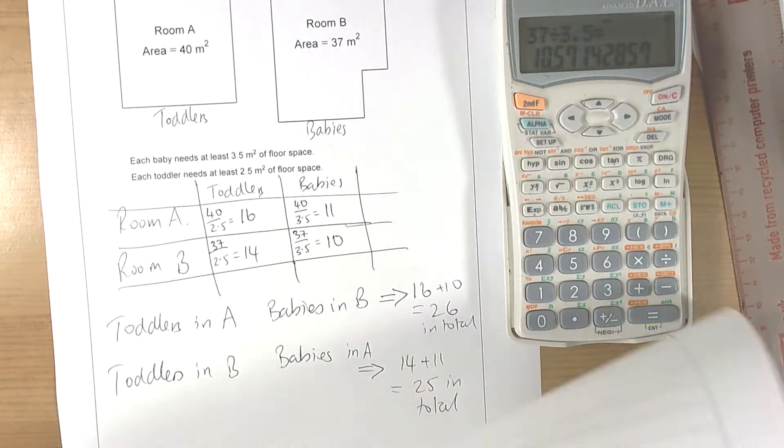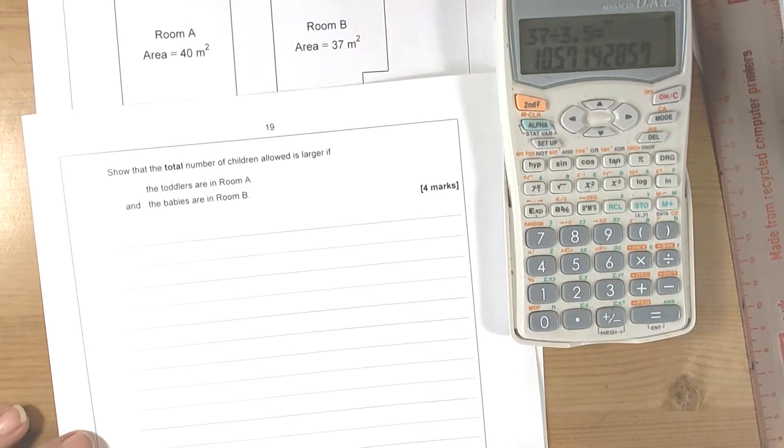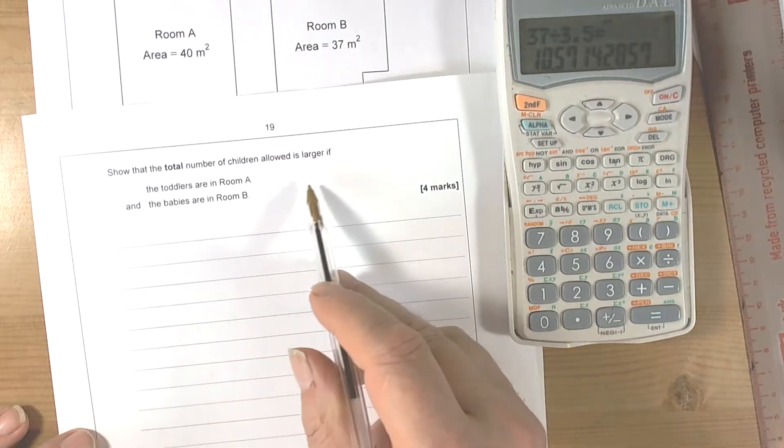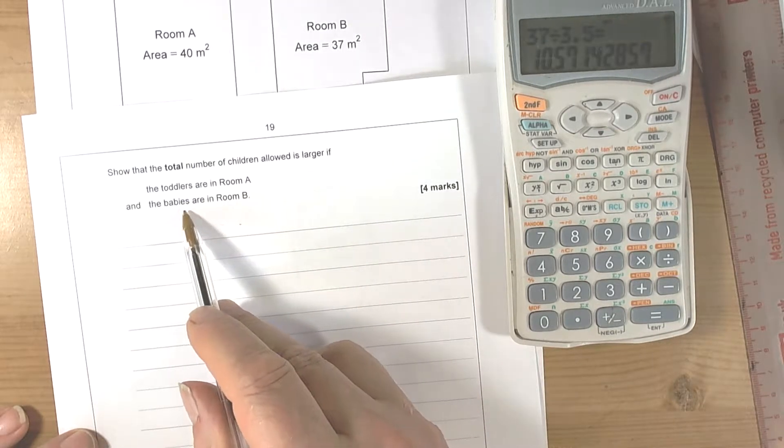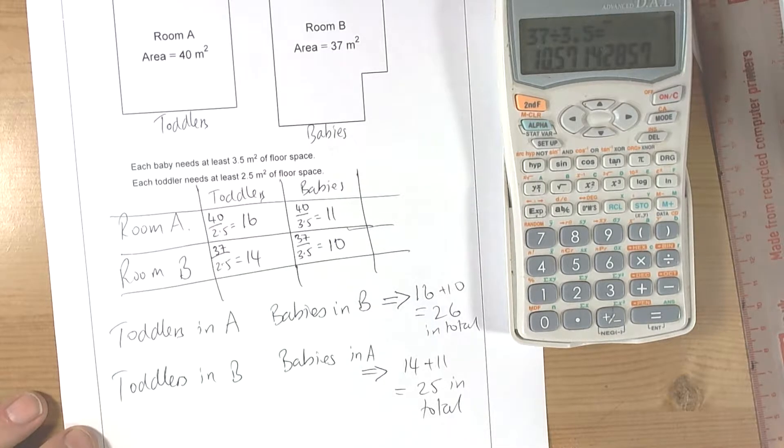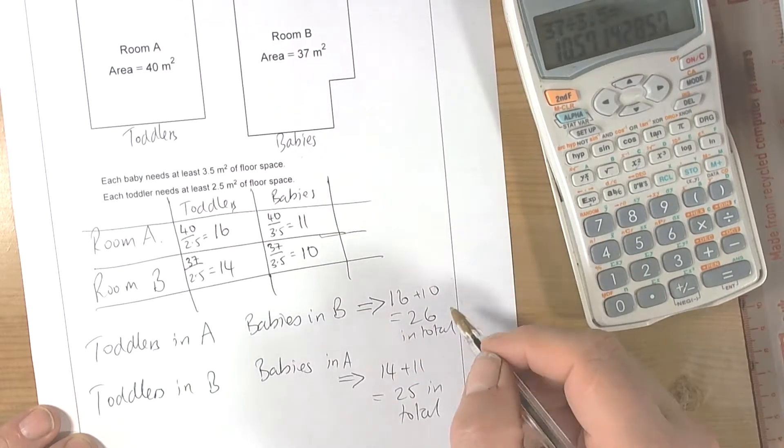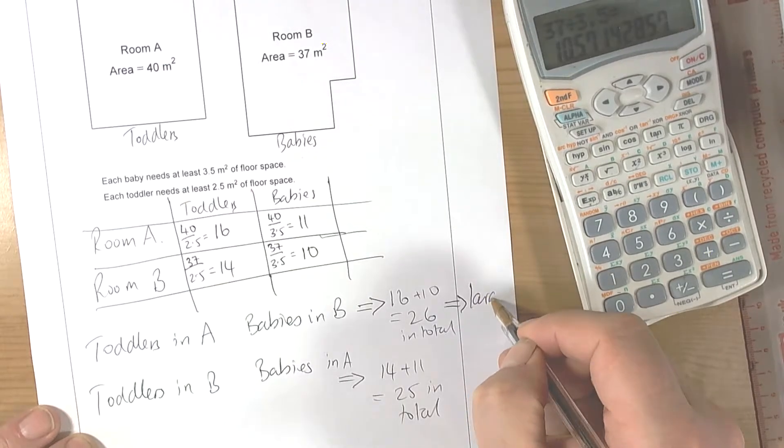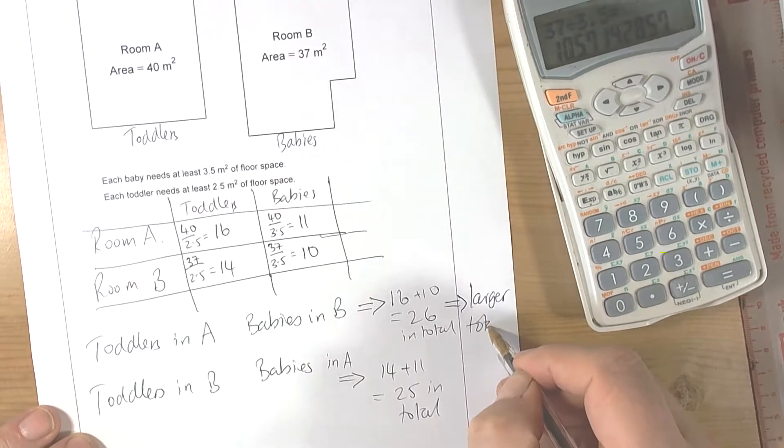So reminding us what the question was - the question said show that the total number allowed is larger if the toddlers are in A and the babies in B. So toddlers in A and babies in B gives a larger total.